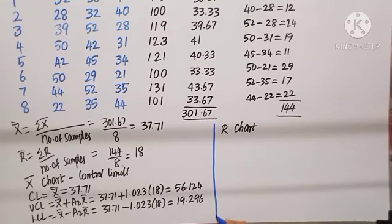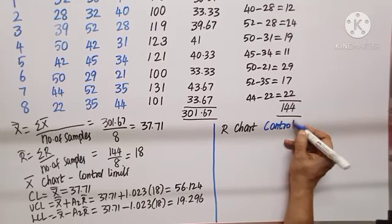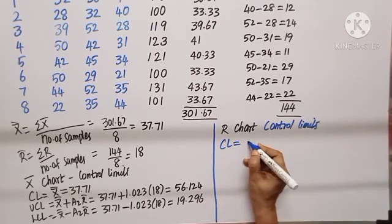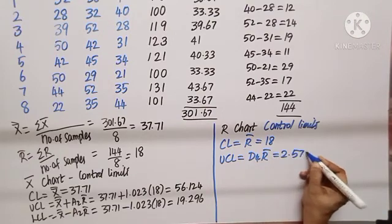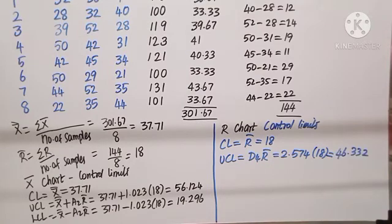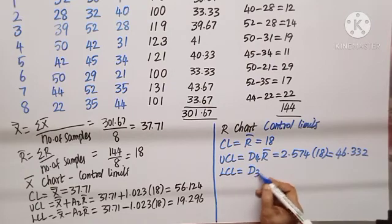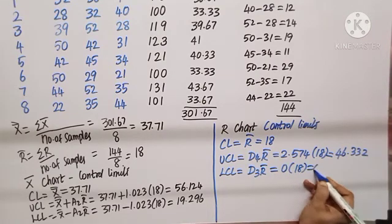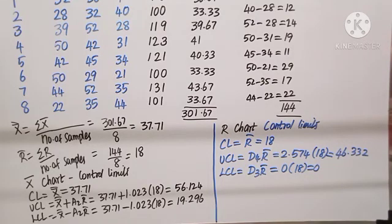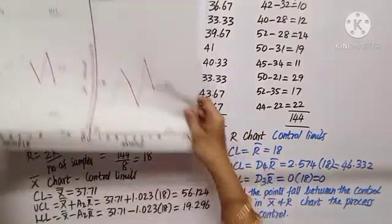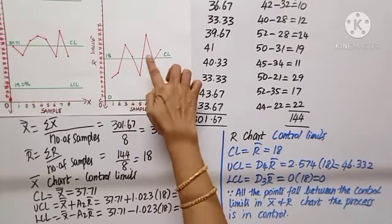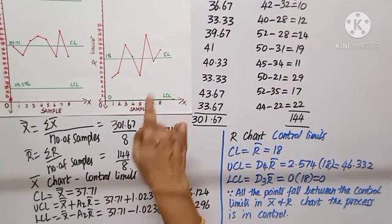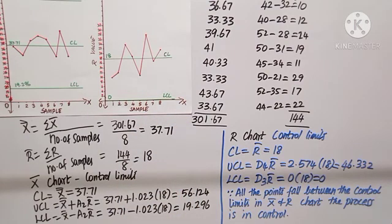Proceeding to the r chart: CL equals r-bar, that is 18. UCL equals D4 into r-bar: 2.574 into 18 equals 46.332. LCL equals D3 into r-bar: 0 into 18 equals 0. We then construct and plot the x-bar and r chart. All points in both the x-bar chart and r chart lie well within the LCL and UCL, so we conclude the process is in control.